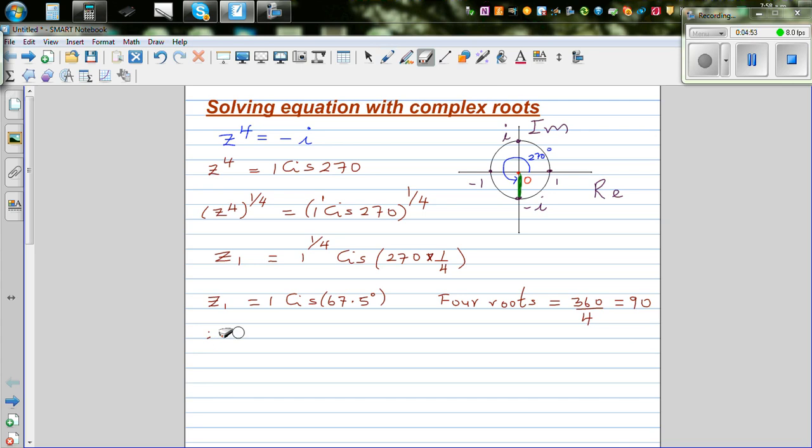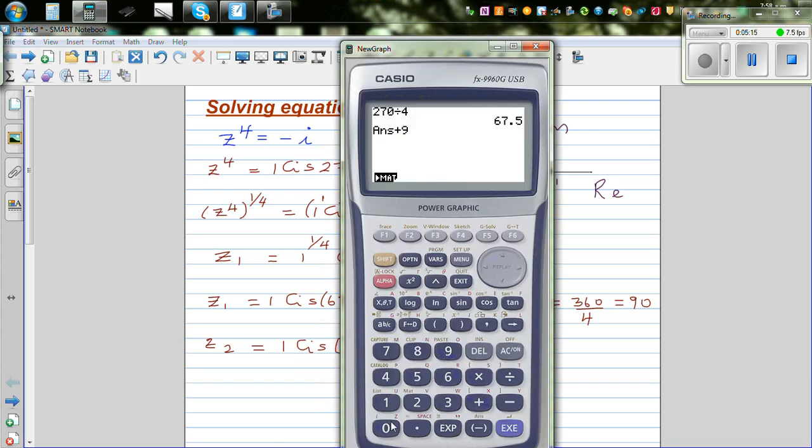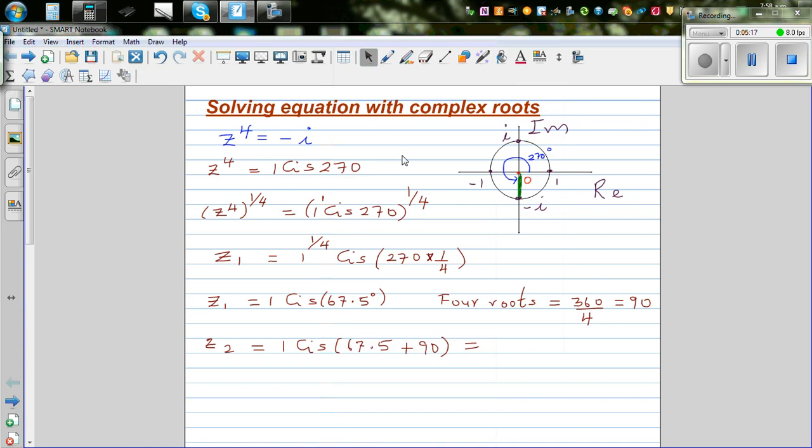So directly you can say z2 would be 1 cis 67.5 plus 90, which is 157.5. So this is 1 cis 157.5.